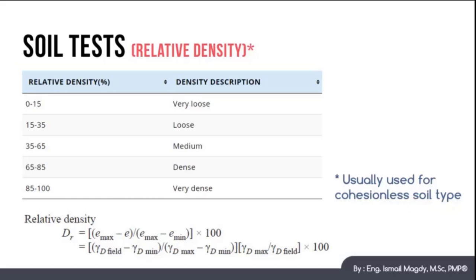The relative density is measured by this equation, which is DR equals E max minus E all over E max minus E minimum, all multiplied by 100, or gamma dry field minus gamma dry minimum, all divided by gamma dry maximum minus gamma dry minimum, all multiplied by gamma dry maximum over gamma dry field, all multiplied by 100.